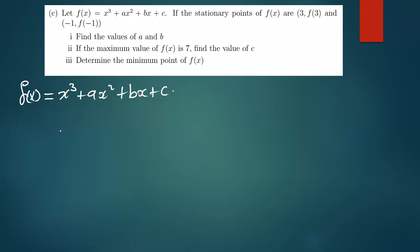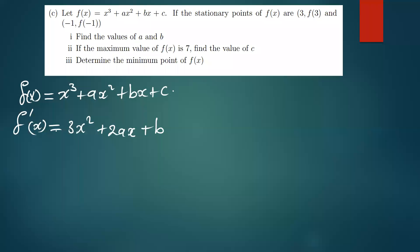The gradient is simply the first derivative of any given function. So when we find f'(x), this gives us the gradient function. When you differentiate x³ we get 3x², differentiate ax² we get 2ax, differentiate bx we get b, and differentiating the constant c gives us zero.